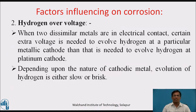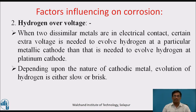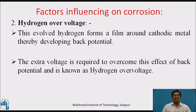Second factor: hydrogen overvoltage. When two dissimilar metals are in electrical contact, certain extra voltage is needed to evolve hydrogen at a particular metallic cathode than that needed to evolve hydrogen at a platinum electrode. Depending upon the nature of the cathodic metal, the evolution of hydrogen is either slow or brisk. This evolved hydrogen forms a film around the cathodic metal, thereby developing a back potential. Thus, the extra voltage required to overcome this effect is known as hydrogen overvoltage.